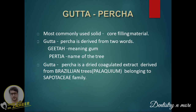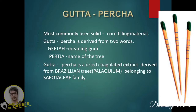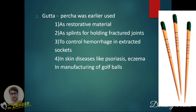Gutta percha is the most commonly used solid core filling material. It is derived from two words: 'gutta' meaning gum, and 'percha,' the name of the tree. Gutta percha is a dried, coagulated extract derived from a Brazilian tree belonging to the Sapotaceae family. It was earlier used as a restorative material, for holding fracture joints, to control hemorrhage in extraction sockets, and in skin diseases like psoriasis and eczema, and also in manufacturing golf balls.